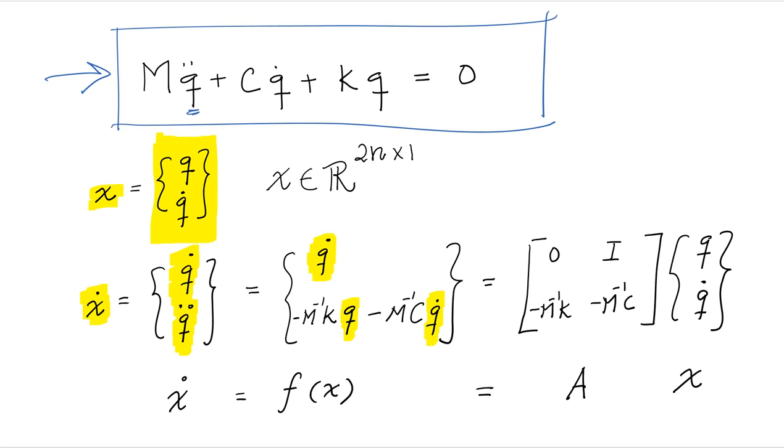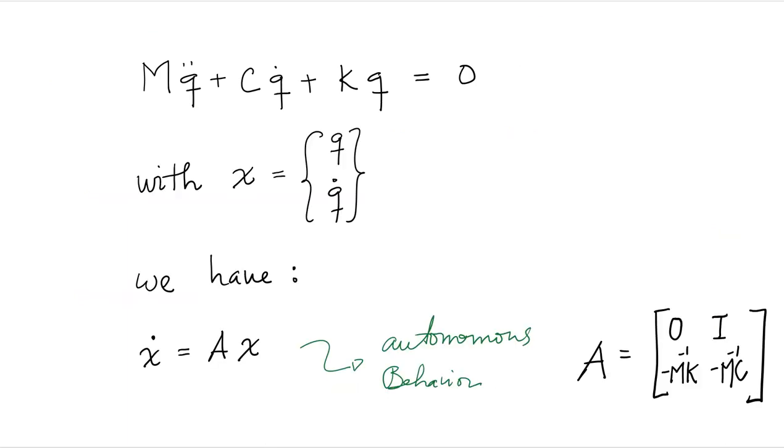Furthermore, we can write that in matrix form. If we write it as a matrix, zero, identity, minus M to the minus one K, minus M to the minus one C, times X. And from here, we obtain X dot as a vector equals to A, a matrix, times X vector. So, summarizing, if we have our equation of motion and we select the state vector as Q and Q dot, we arrive at X dot equals AX.